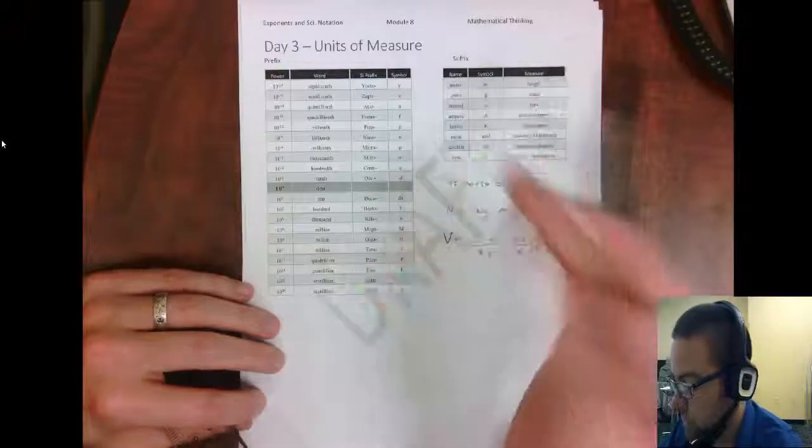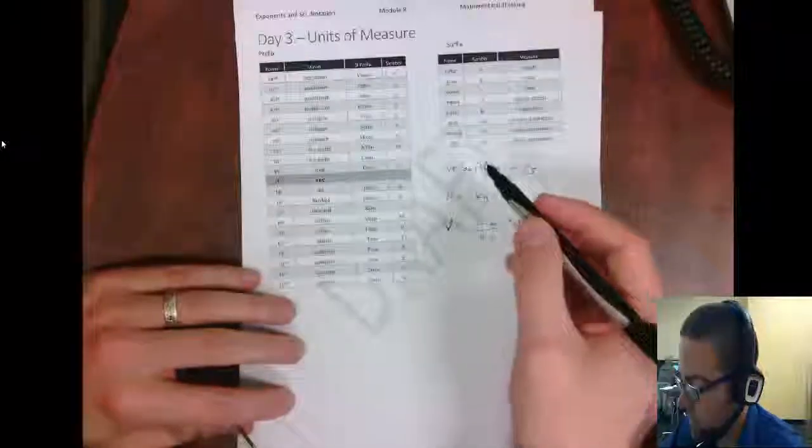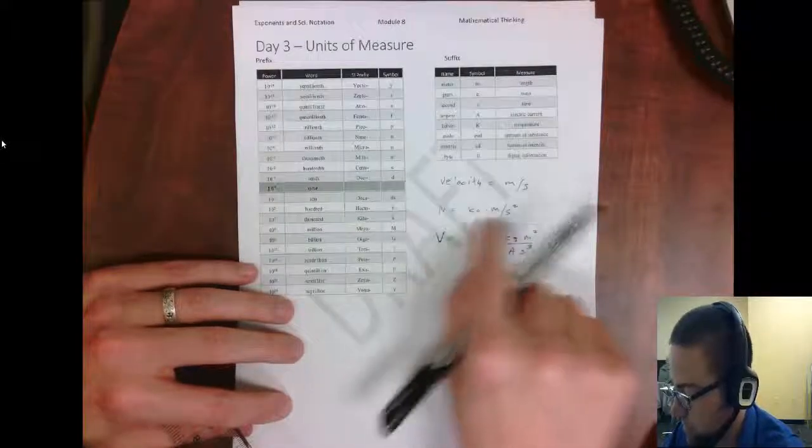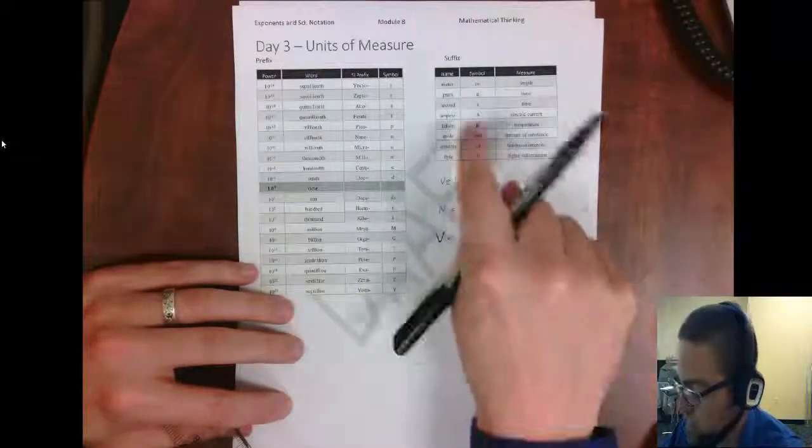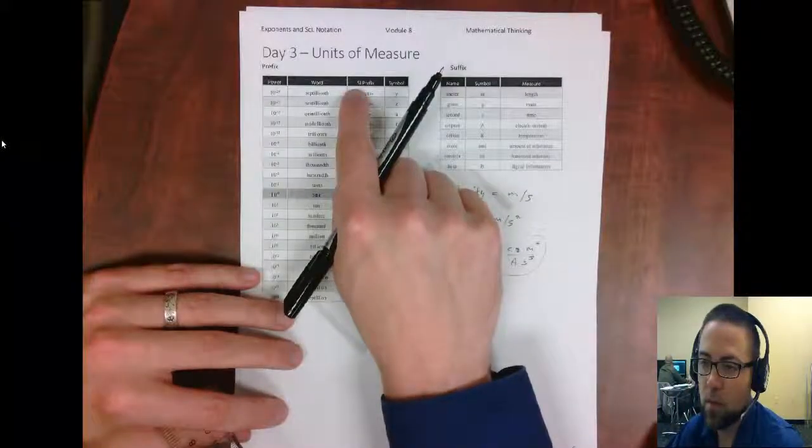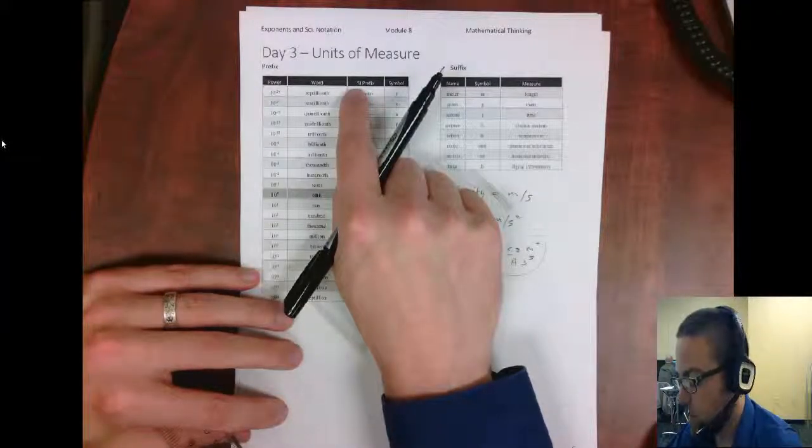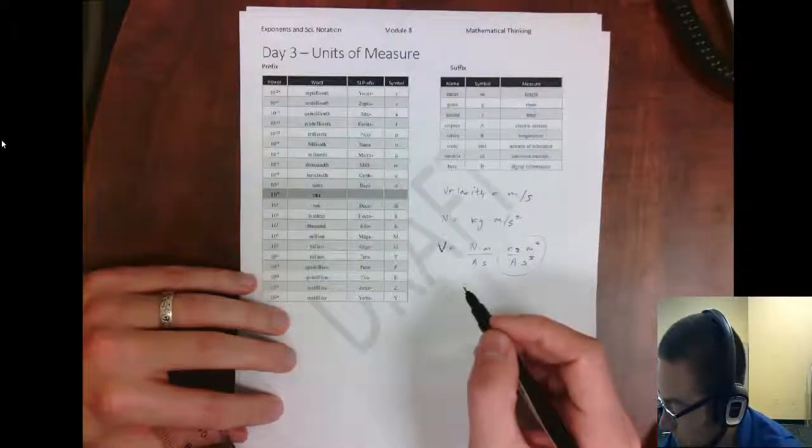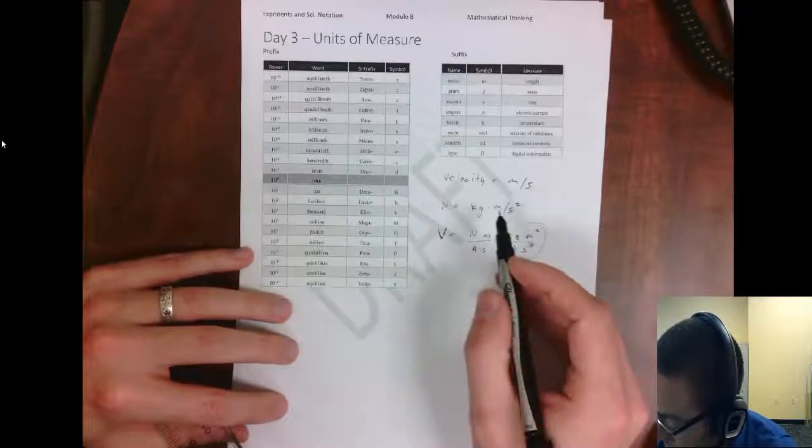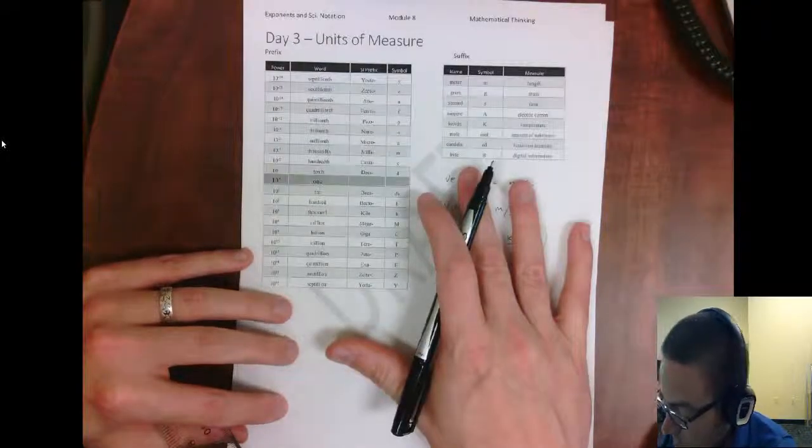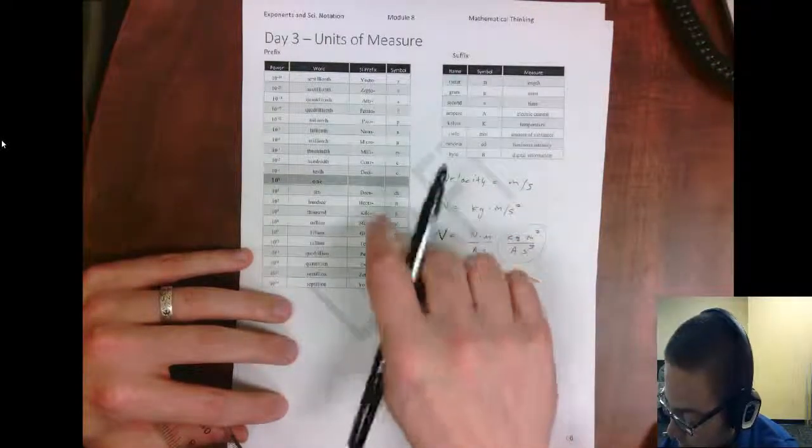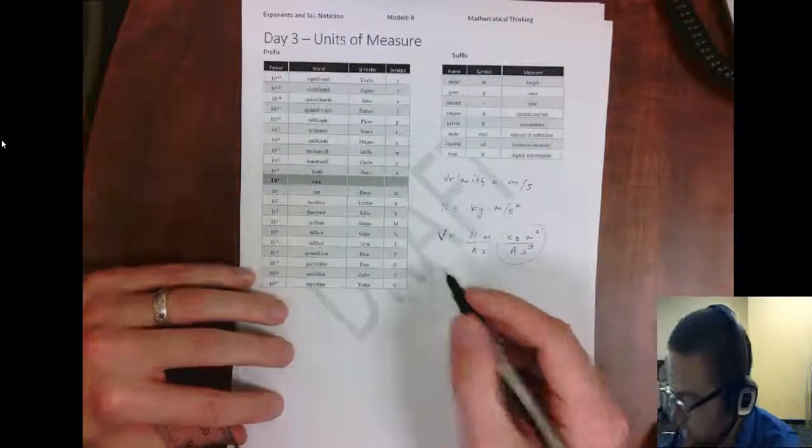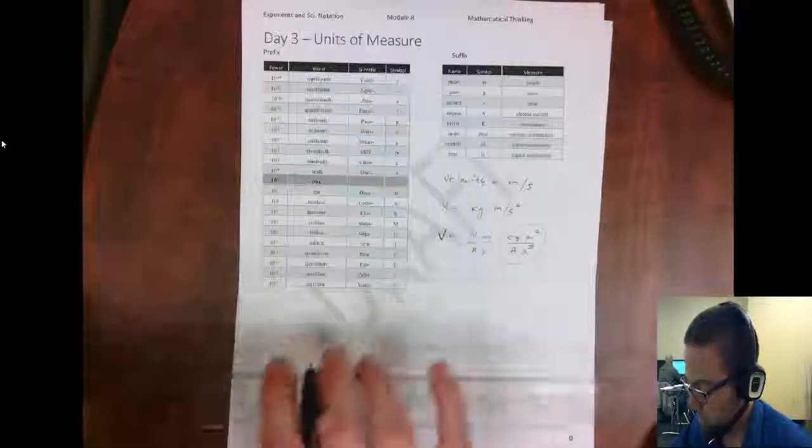So these are some of the basic ones. You can always make up other ones that exist, like pounds are also a unit of force. But there is the SI system. It stands for International System of Units. So that is what units are. And the way that we put the units together are to use these prefixes and suffixes. So let's just take an example of meters.